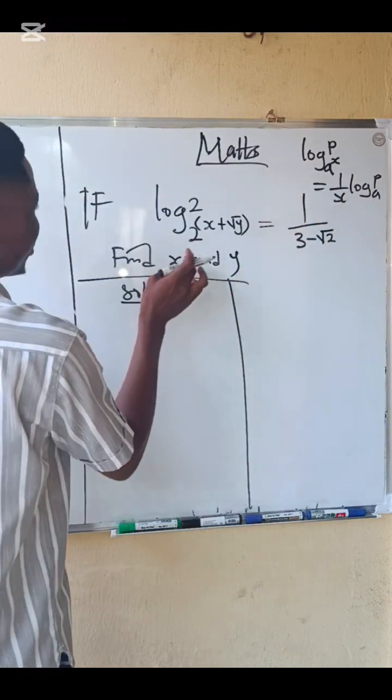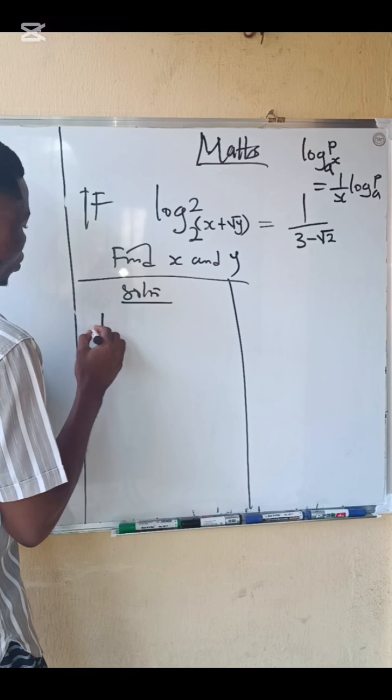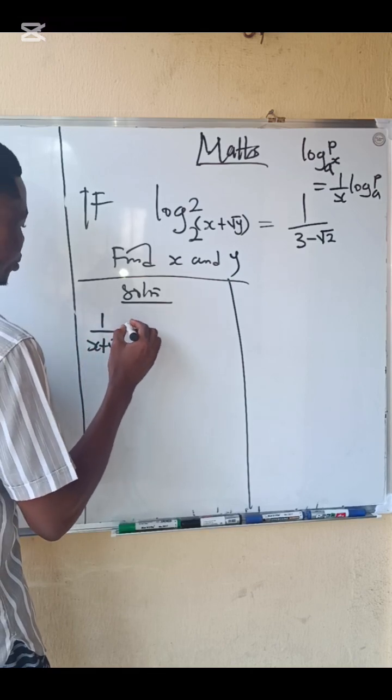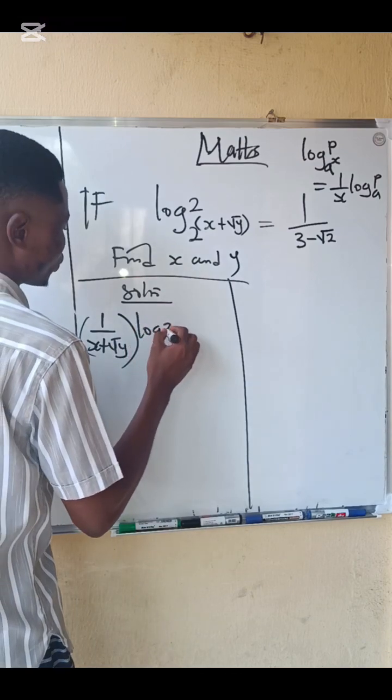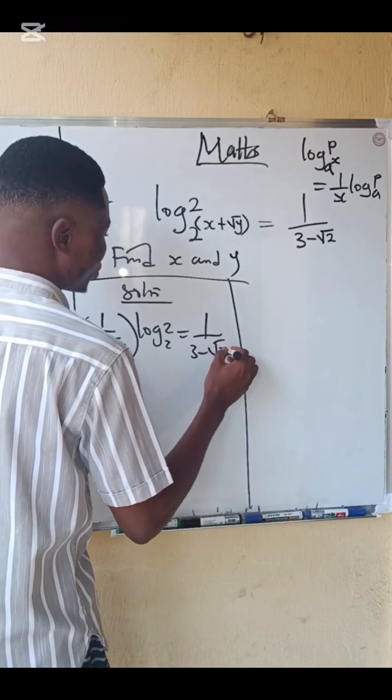So we are going to have 1 over (x plus root y) multiplied by log base 2 of 2 equals 1 over (3 minus root 2).